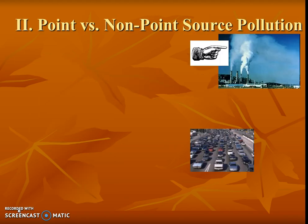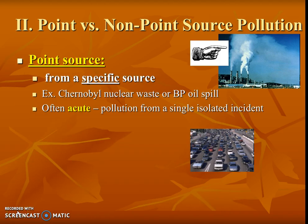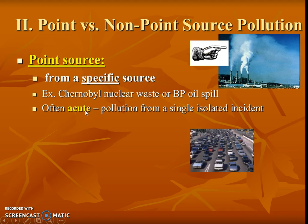When we talk about pollutants, we talk about them in a couple of different categories. This is our first comparison and really important key vocab terms. Our first term is point source pollution. Notice here in our visual — we literally could point to the place the pollutant came from with our finger. It's a lot easier to regulate these because we can identify who is creating the pollutant. For instance, the Chernobyl Russian nuclear waste disaster, the Deepwater Horizon BP oil spill. These are usually going to cause acute pollution because it's a single isolated incident.